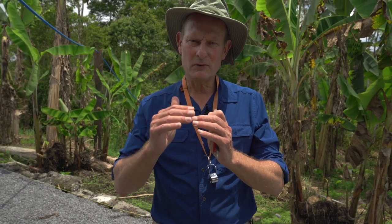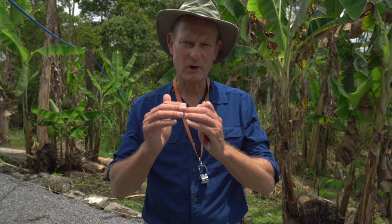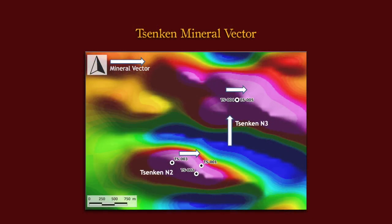What does this mean for our exploration program going forward? We know we've got a vector to the north — between holes one and two in Sync 2, and holes four and five in Sync 3 — almost two kilometers to the north, so we know we've got to keep going north. We've also got a vector towards the east because hole five is more interesting than hole four: it's got more iron and more copper in it.